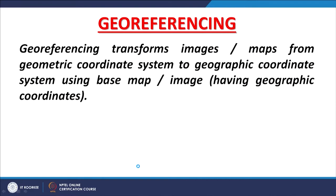We can now define what georeferencing is. Georeferencing basically transforms images, scanned maps, or images which are in a geometric coordinate system to a geographic coordinate system. In order to perform this, we use either a base map or image having geographic coordinates, or maybe some library available to us. If we have a good library of ground control points — GCPs in short — we can access that library. This reference tells us how individual cells or pixels will be transformed from geometric domain to geographic domain.